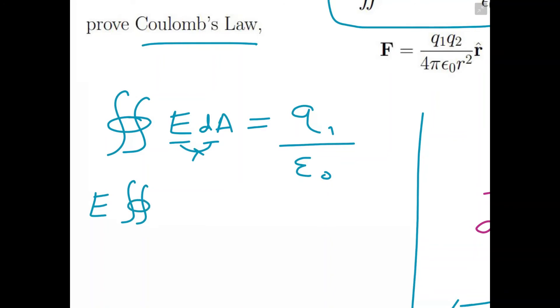We can take E out of the double integral because it's a constant, and we're left with the double integral of 1 times dA over the closed surface. Because dA is a sphere, this would just be equal to the surface area of the sphere. That's equal to 4πr².